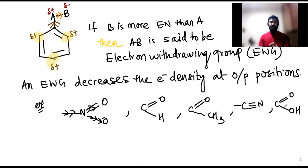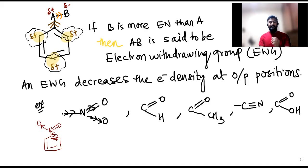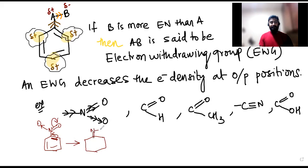Now let me explain why these ortho and para positions get a positive charge and become electron deficient. Taking the nitro group as an example: the double bond migrates towards nitrogen because oxygen is pulling electrons from nitrogen, so nitrogen pulls from the benzene ring. The compound pulls electrons toward itself, nitrogen loses electrons to oxygen, and as a result there will be a double bond formed here and a negative charge on oxygen.